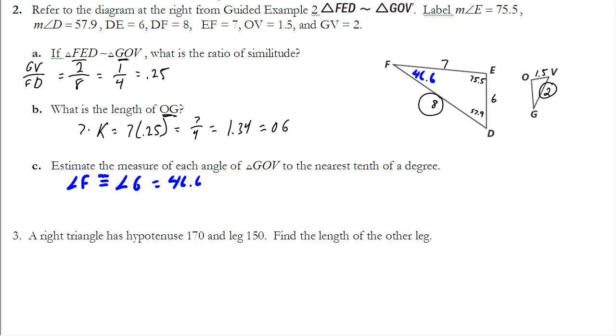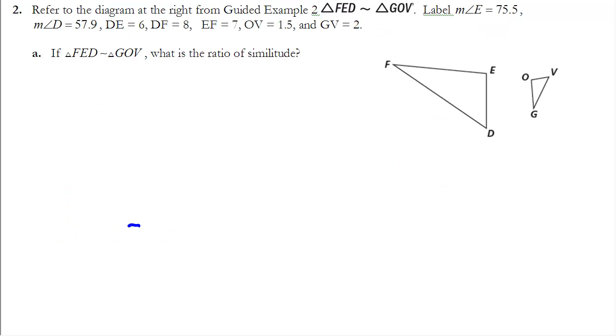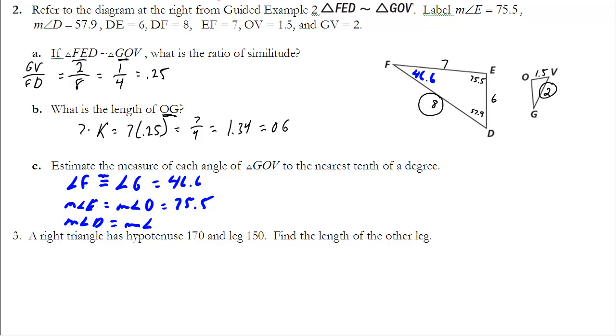I know that the measure of angle E has to be equal to the measure of angle O. Therefore, that must be 75.5 degrees. And finally, I know the measure of angle D is going to be equal to the measure of angle V. So D and V would have to be equal to each other, and that would be 57.9.